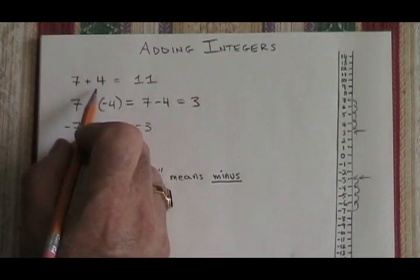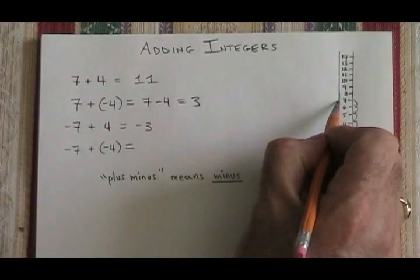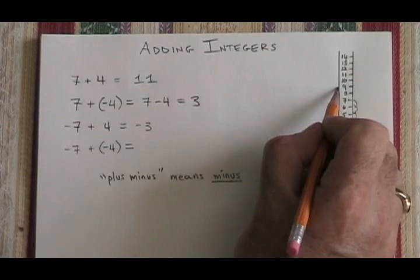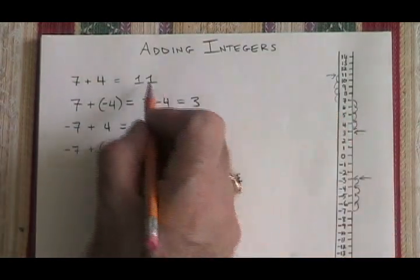7 plus 4 equals 11 can also be done on the thermometer number line. From 7, we go up 4 places, and we end up at 11. Just like we said.